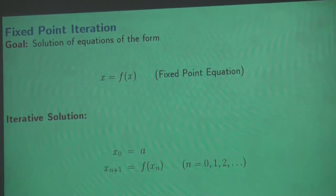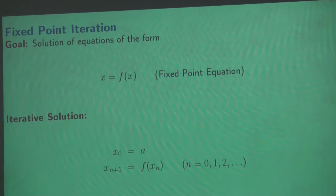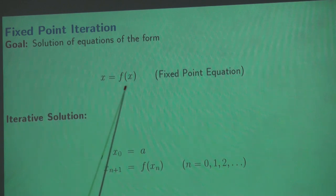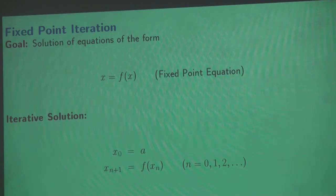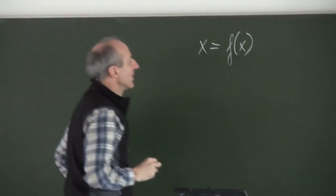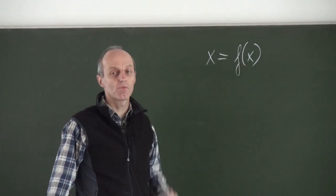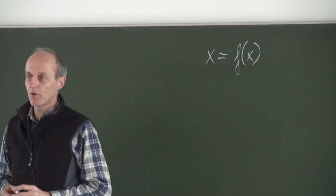Let's go to the next algorithm, which is fixed point iteration. We will see that this is a very nice algorithm, and under which conditions we have slow or fast or even extremely fast convergence. Let's look at the definition of a fixed point. This is a so-called fixed point equation. All numbers x that fulfill x equals f of x are called fixed points of the function f.